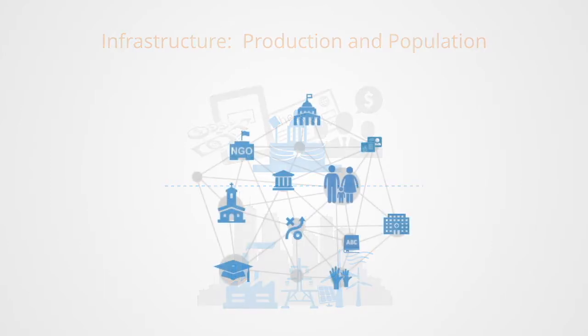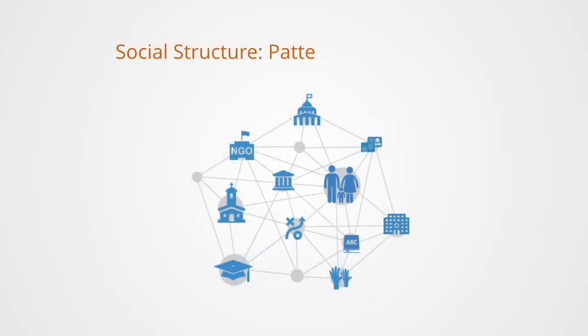The social structures refer to the actual patterns of interaction between people. Every society is composed of certain social institutions that maintain orderly relationships among its people and facilitate the coordination between them.